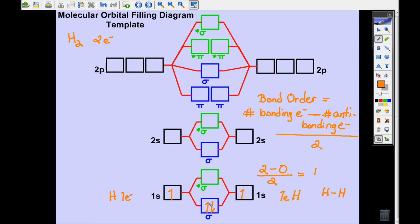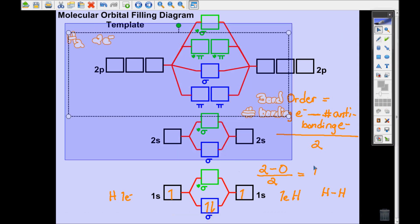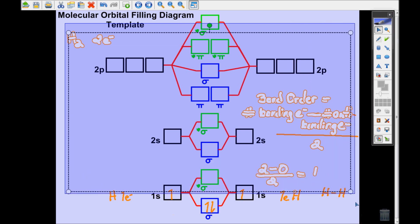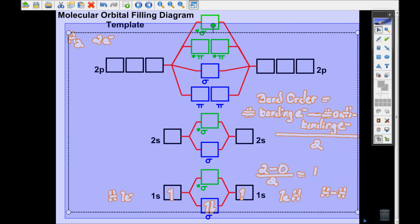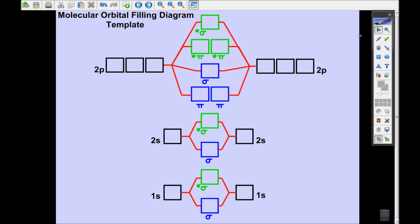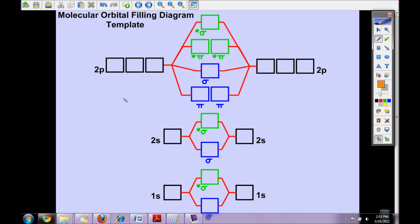That's a very simple molecule of hydrogen. I'm going to erase everything on here and we're going to do helium, because helium is a really good example of what happens when you don't get bonding at all. Let's look at helium.